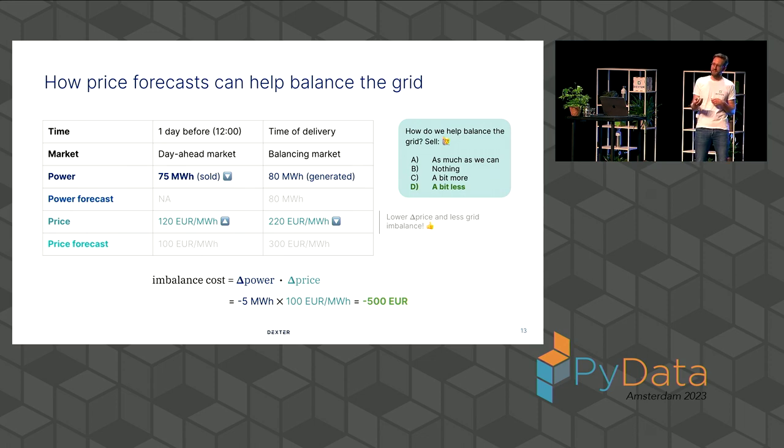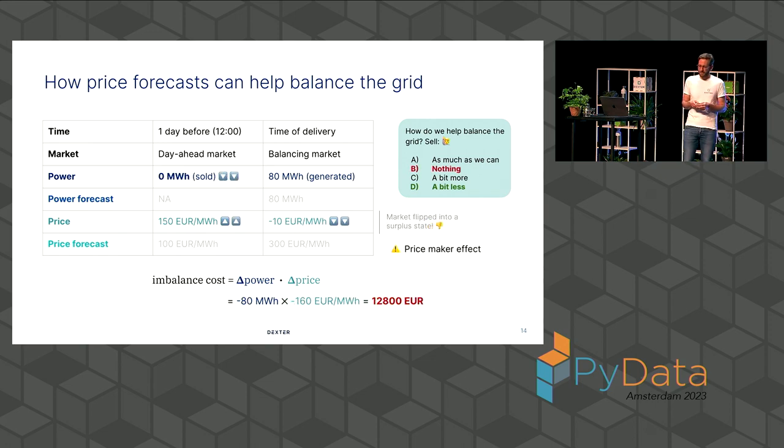So we sell a bit less. Like five megawatt hours less. Then we're the ones actually having this kind of surplus at the time of delivery. And we can help balance the grid. And also, because of this price dynamic, price elasticity, we actually lower the delta price a bit. There's less grid imbalance. And we, for that, get a reward of five times 100 euros per megawatt hour. So 500 euros, yeah, reward, you could say.